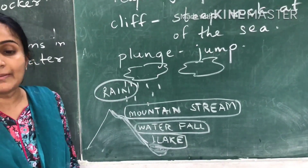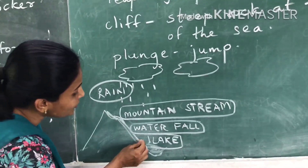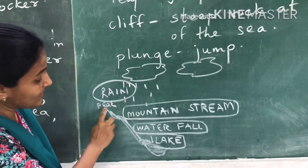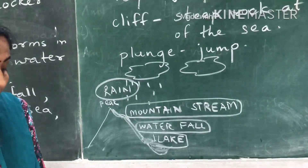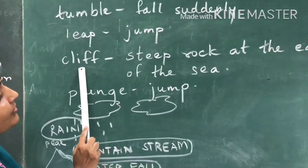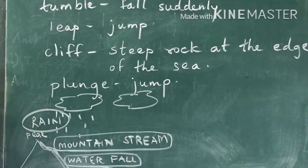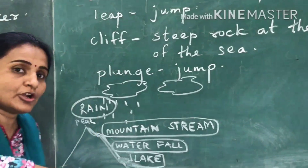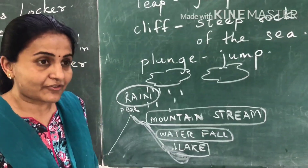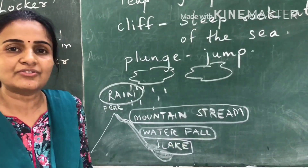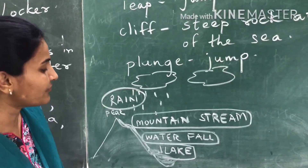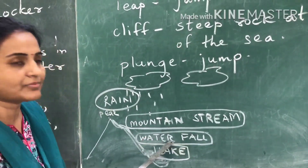'At the foot of the mountain I leap from a stone cliff.' The peak or summit is the top of the mountain, and the foot is the base. Leap means jump; a cliff means steep rocks at the edge. So the water falls suddenly from steep rocks. 'Spiraling, plunging' — plunge also means jump. The water moves in a spiral, jumps, and that stream becomes a waterfall.